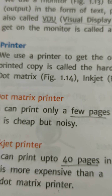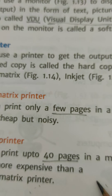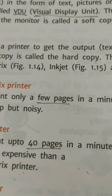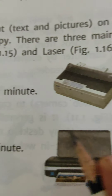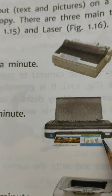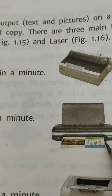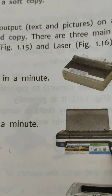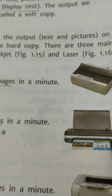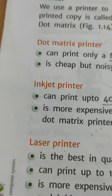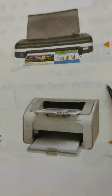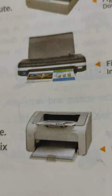The inkjet printer sprays tiny dots of ink onto the surface to form an image. It can print up to 40 pages in one minute. It is more expensive than the dot matrix printer.